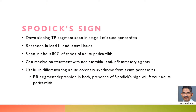Spodic sign is the down-sloping TP segment seen in stage 1 of acute pericarditis. It is best seen in lead 2 and lateral leads. Spodic sign may be seen in about 80% of cases of acute pericarditis. It can resolve on treatment with non-steroidal anti-inflammatory agents.